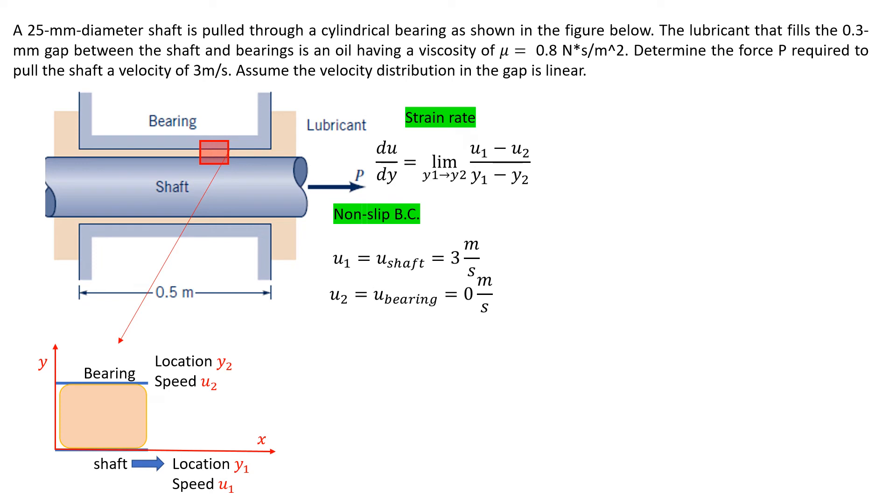Now we'll use the non-slip boundary condition to get u₁ and u₂. u₁ equals the speed of the shaft, which equals 3 meters per second. u₂ equals velocity of the bearing, which is stationary, so it's 0.